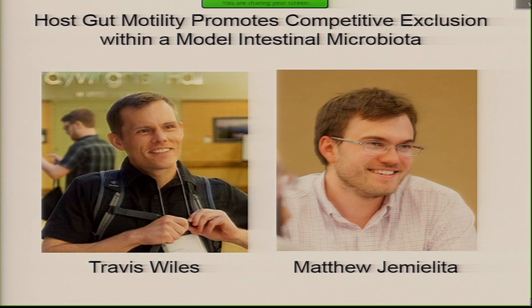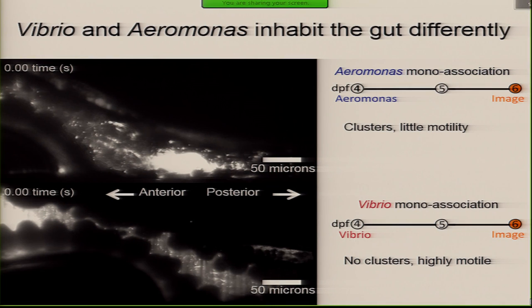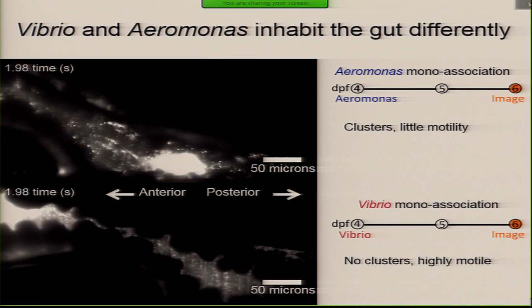This is work of postdoctoral fellow Travis Wiles in my lab and former PhD student Matt Jamalita, a physics student in the laboratory of my colleague Raghu Parthasarathi. They were interested in bacterial-bacterial dynamics within the gut, looking in particular at two different commensal bacteria: an Aeromonas and a Vibrio species. These bacteria inhabit the gut very differently — the Aeromonas largely inhabiting clumps with very few planktonic cells, whereas the Vibrio is almost entirely planktonic with very fast-moving cells.